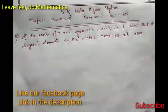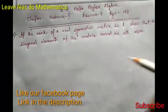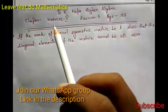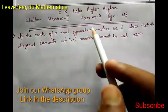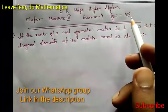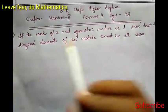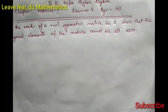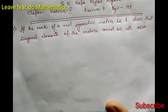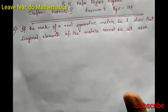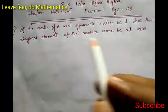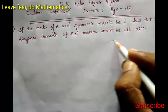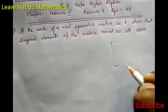Hello friends, welcome to Leap Year Do Mathematics. Today we are going to solve another problem from the higher algebra book. This is a problem on matrices, exercise 4, page number 103. If the rank of a real symmetric matrix is 1, show that the diagonal elements of the matrix cannot be all zero. This is the problem — it is very easy but an interesting one.